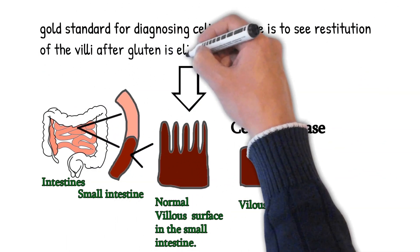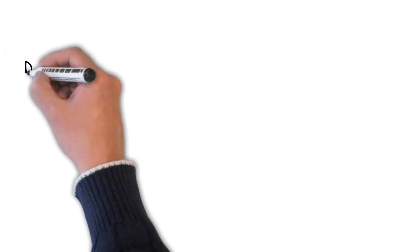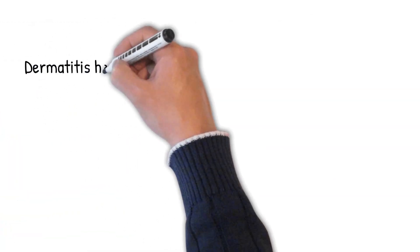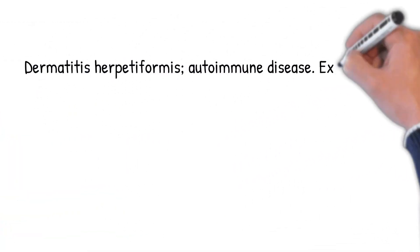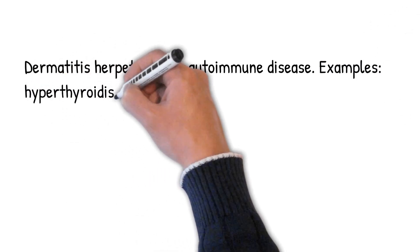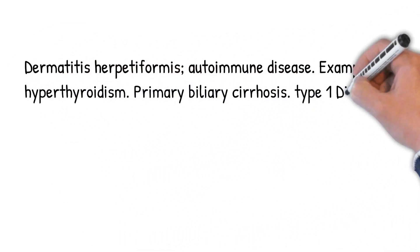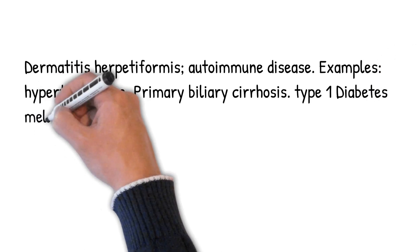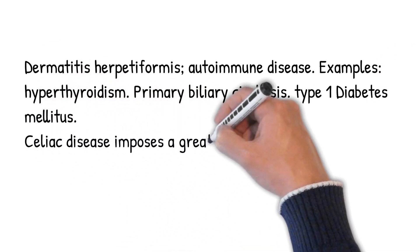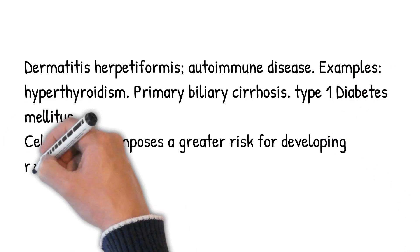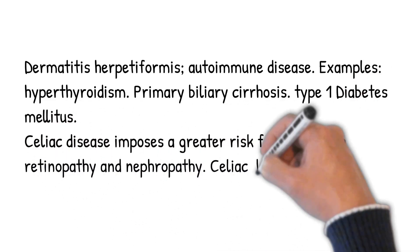Other disease associations that commonly occur with celiac disease include dermatitis herpetiformis and autoimmune diseases such as hyperthyroidism, primary biliary cirrhosis, and type 1 diabetes mellitus. Celiac disease also imposes a greater risk for developing retinopathy and nephropathy.